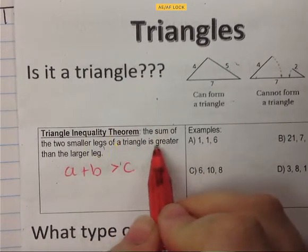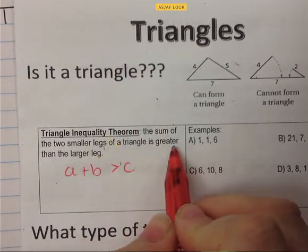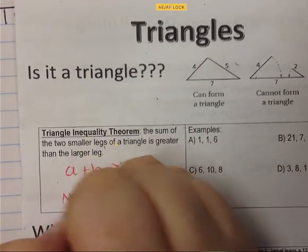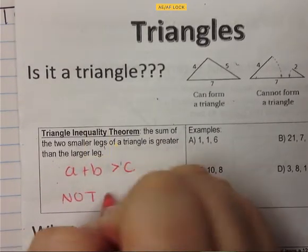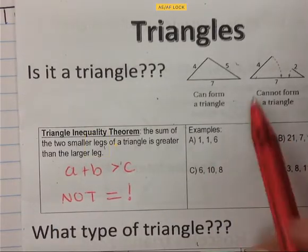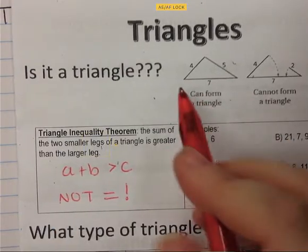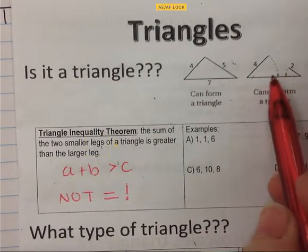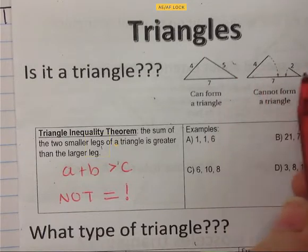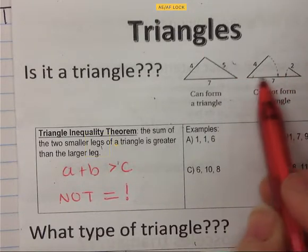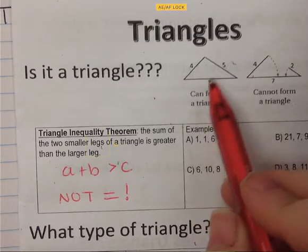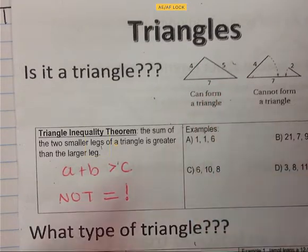It says it has to be greater than — not equal. If it's equal, that means the legs will close and form a line, which will not form a triangle. That's why it has to close before it hits the base.